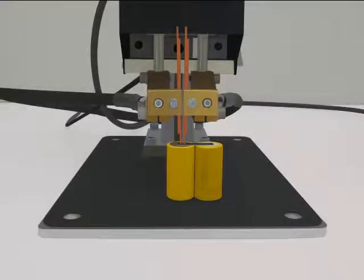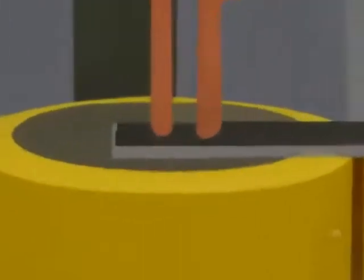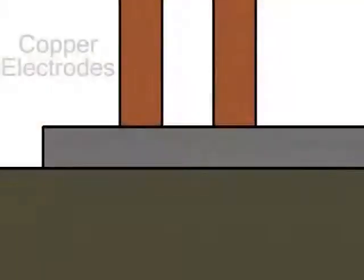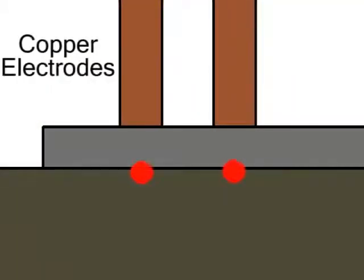Series welding, often called parallel welding, is used when the weld location has access from only one side. During a series weld, two weld spots will be created, one under each electrode. A series weld takes more energy than other electrode configurations.